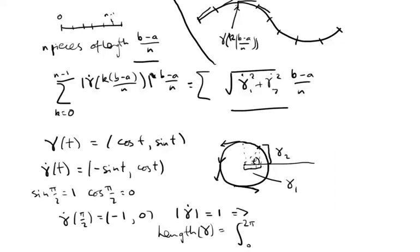So that implies that the length of this circle is just the integral between 0 and 2 pi, because t goes from 0 to 2 pi, of 1 dt. So that is precisely 2 pi, which is indeed the length or circumference of this circle of radius 1.